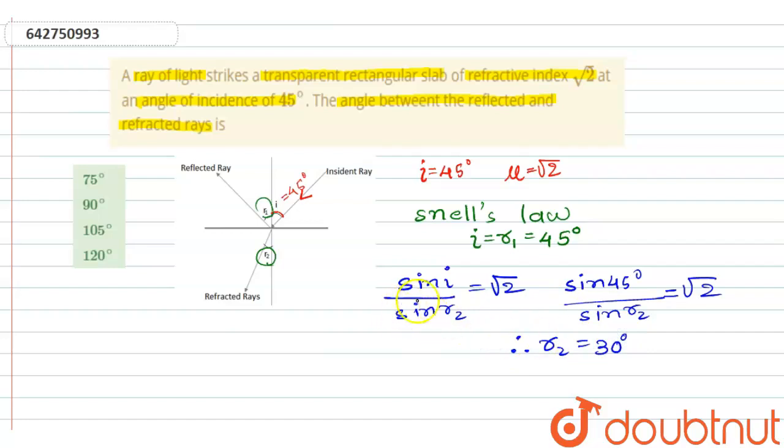Now from figure, this is r₁ is 30 degrees, r₁ is 45 degrees, right? This angle is 90 and this also is 90. So we have to find this angle, angle between reflected ray and refracted ray.